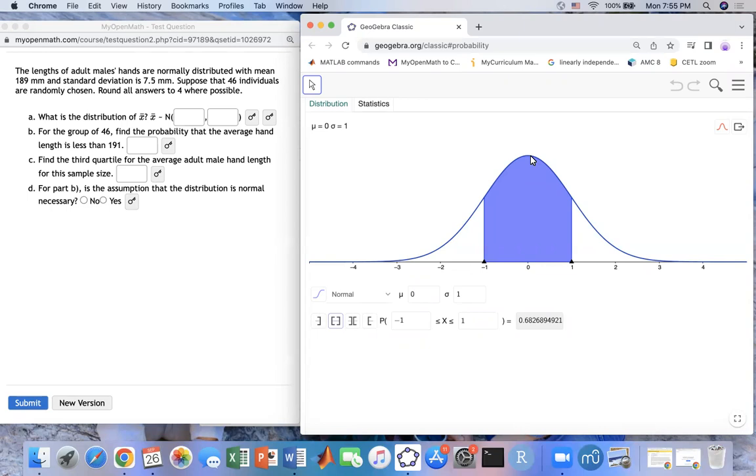So on this here, we have this one they say normally distributed right here. Then you will put this one would be the mean would be 189, we put in right here.